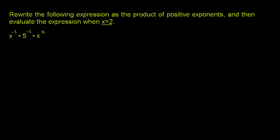We want to rewrite those as positive exponents. To do that, we just have to remember that something to a negative power — for example, x to the negative 2 power — is the exact same thing as 1 over x to the positive 2 power. If I have a to the negative b power, that's the same as 1 over a to the b power. You can get rid of that negative by putting a 1 over the whole thing, by taking the inverse of the whole expression.